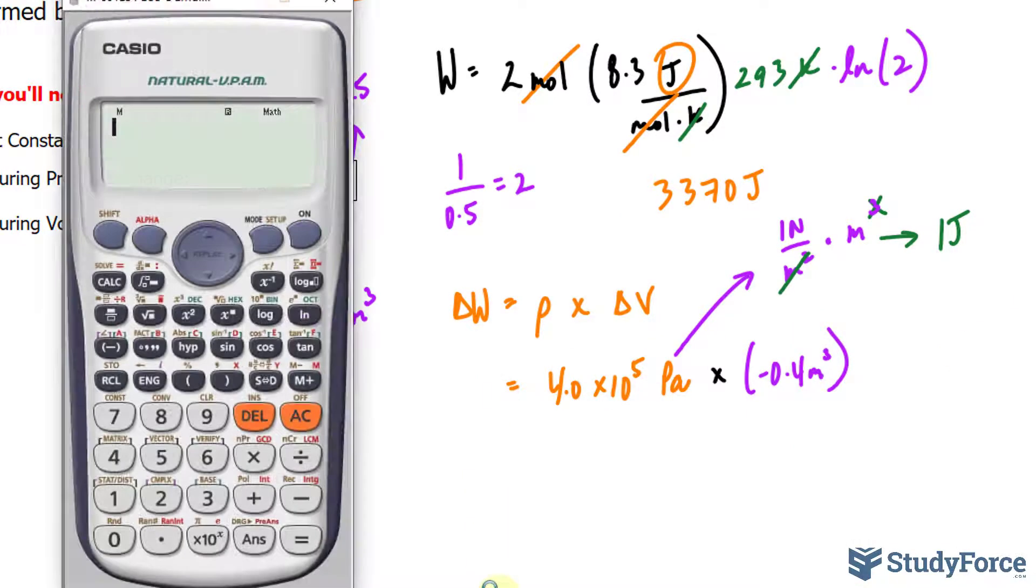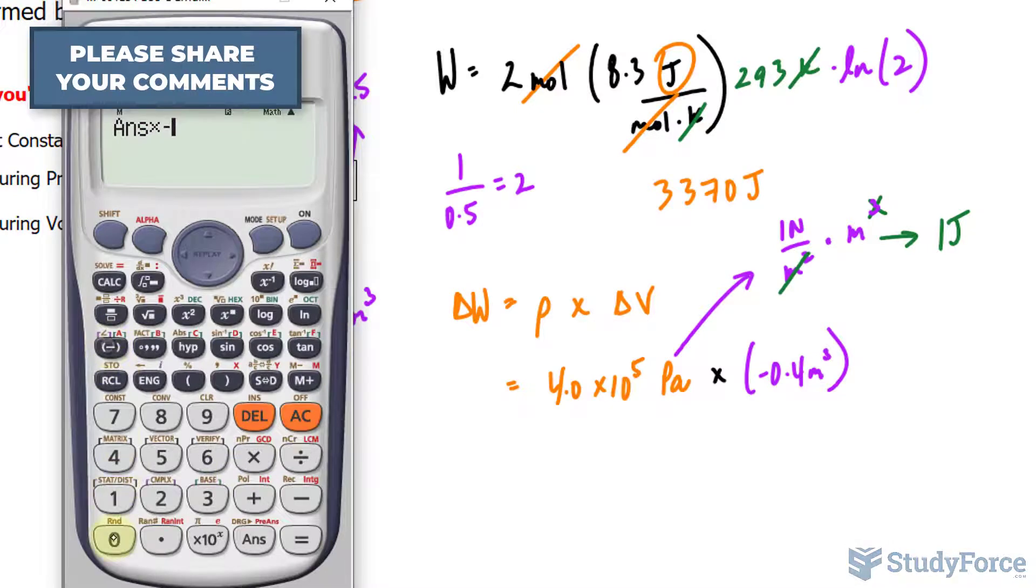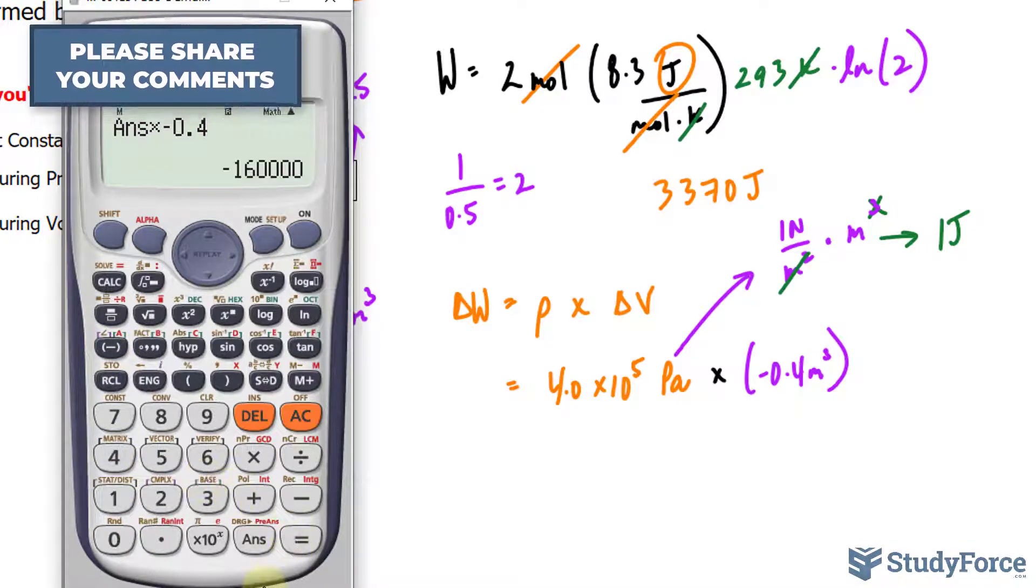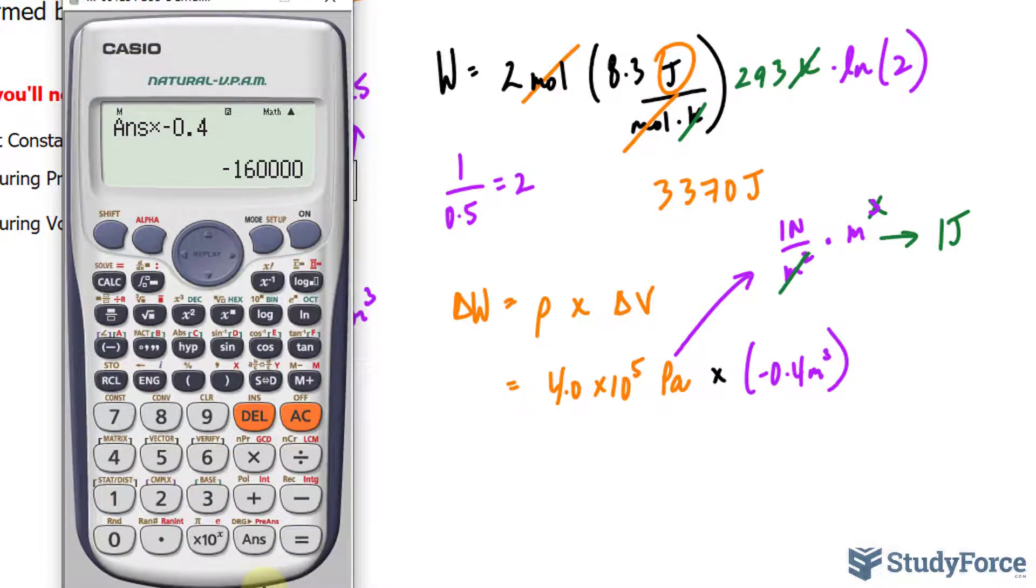Using our calculator now, I'll take this value, 4.0 times 10 to the power of 5, and multiply that to negative 0.4. That gives us a value that is negative 1.6 times 10 to the power of 5 joules.